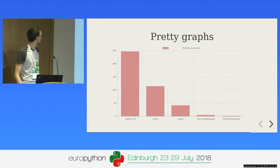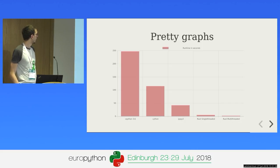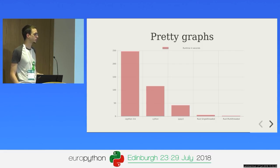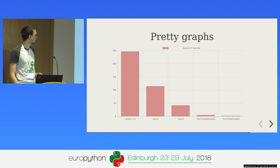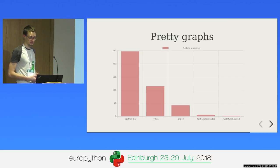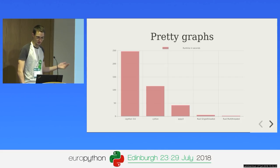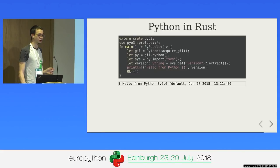Let's look at some benchmark graphs. CPython didn't do well. I also tried Cython — I'm not a Cython expert, probably did something wrong, likely the slow Python RNG. PyPy did quite a bit better at around 46 seconds. Rust single-threaded and multi-threaded far exceed all of those — thankfully, otherwise we'd be feeling pretty stupid.